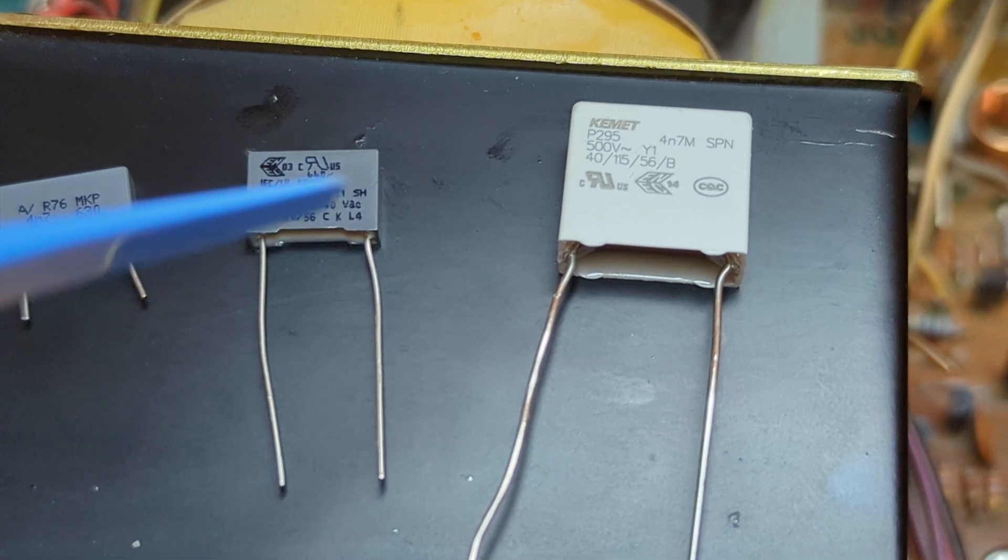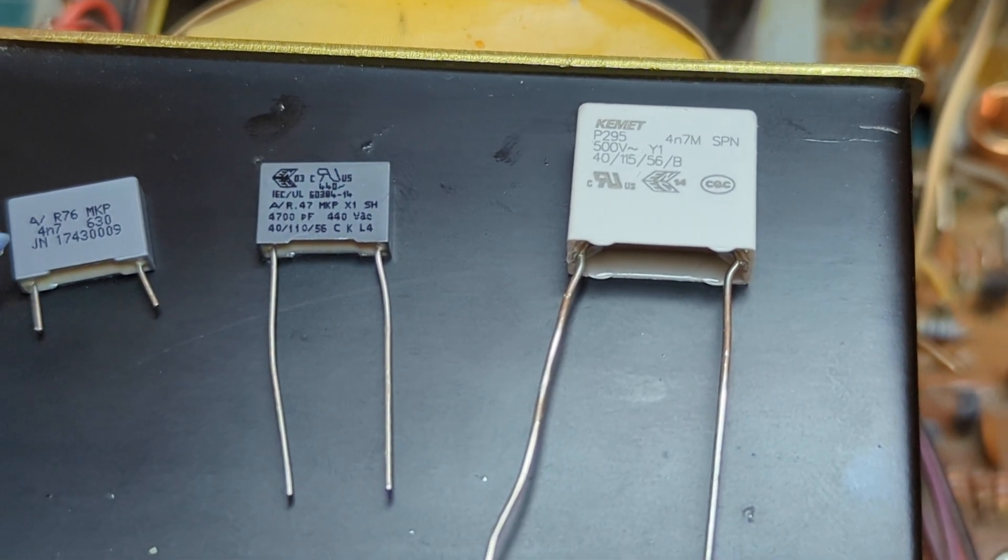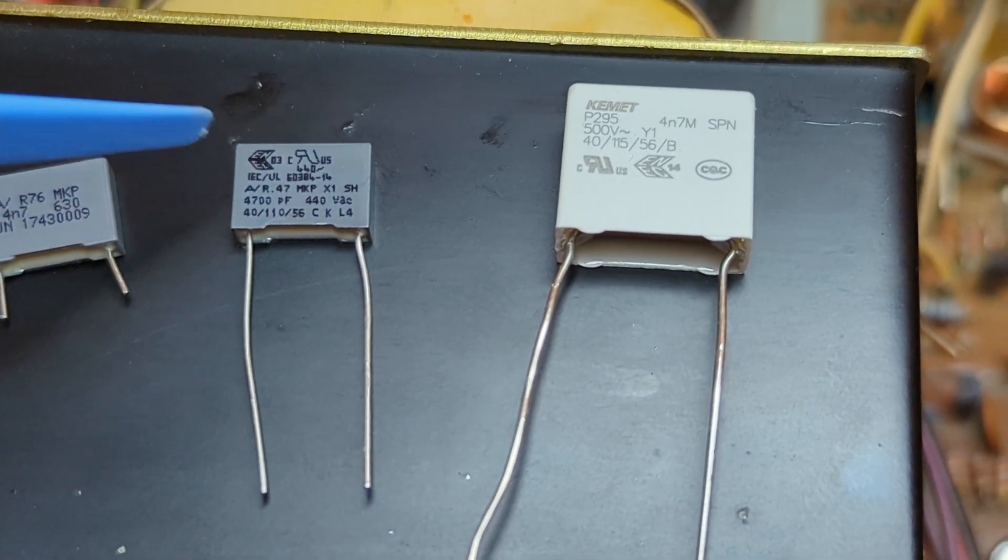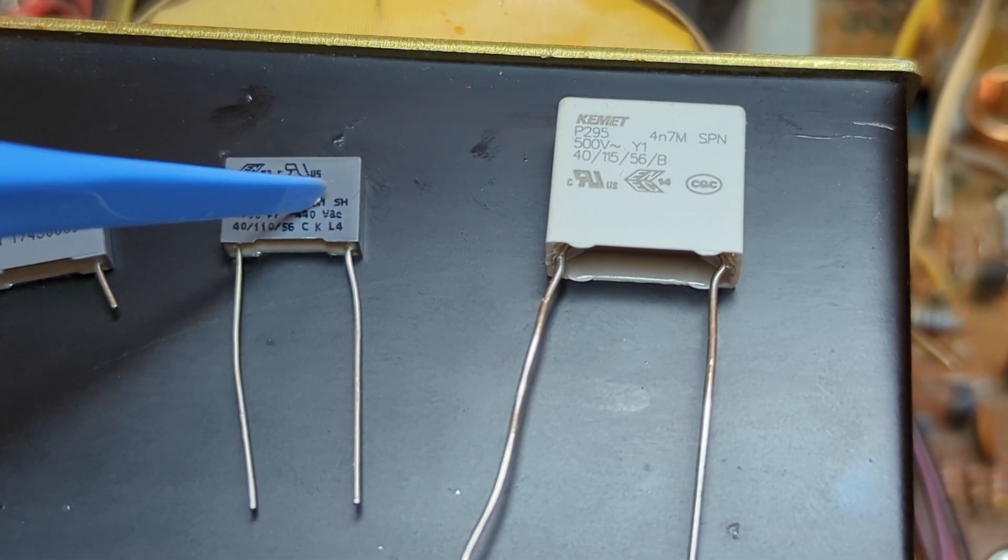And this is what the safety capacitor looks like. So it looks pretty much the same, except that you can see the safety class written on it. So this one is an X1 safety capacitor.